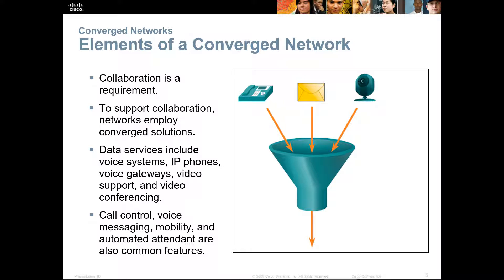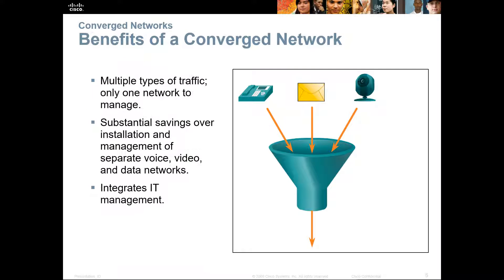This idea of a converged network is taking root. We are combining data, video, and voice all on one wire, and that is allowing us to have increased items for collaboration. To support that collaboration, our networks are employing converged solutions. It doesn't matter if it's voice, video, or messaging. It doesn't matter if you're mobile or static. You want the features you need, how you need them, when you need them. That is one of the key benefits of converged networking — all traffic types on one network.